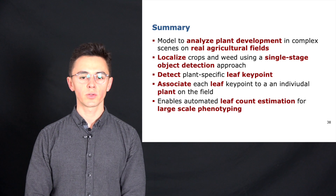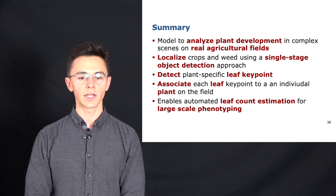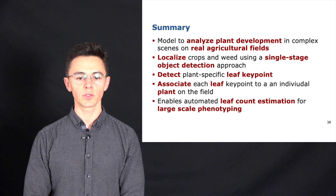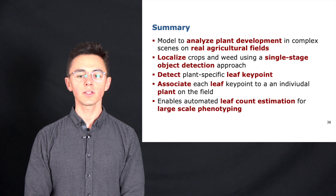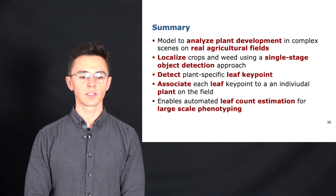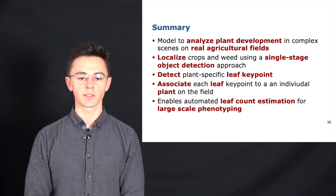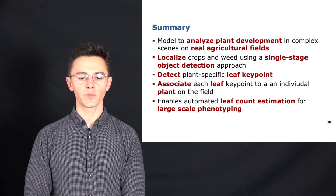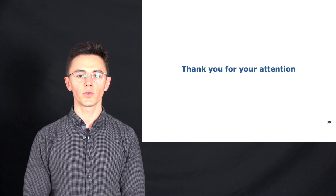Finally, I would like to give a short summary. We implemented a vision-based model which analyzes the plant development in complex scenes on real agricultural fields by first localizing crops and weeds using a single-stage object detection approach. Simultaneously, we detect plant-specific leaf keypoints which we associate to individual plants. This enables an automatic leaf count estimation for large-scale phenotyping. With that, I thank you for your attention.